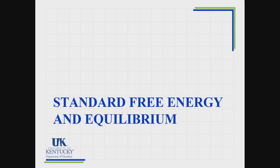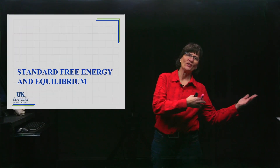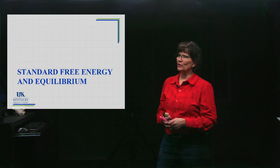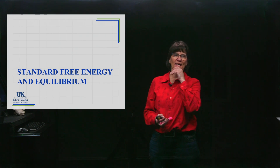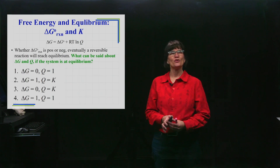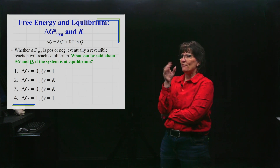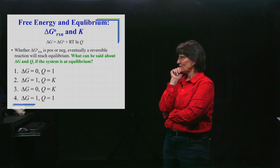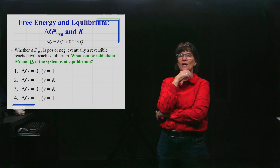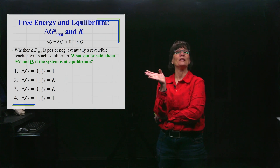We've been alluding to free energy and equilibrium, pushing the reaction to the right or to the left to reach equilibrium. We're going to look at the actual numeric and calculation relationship between Gibbs free energy and equilibrium. Let's start with a question just to get you thinking. Whether the delta G standard is positive or negative, eventually the reaction will go either one way or the other and establish equilibrium — that's going to happen eventually.